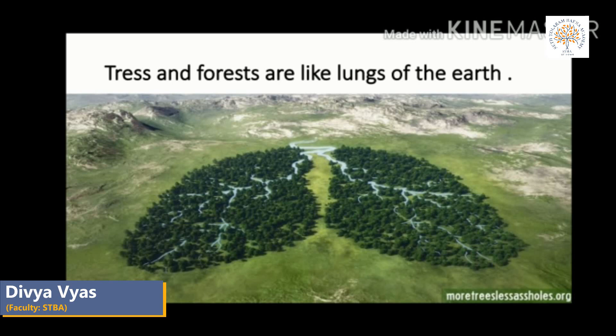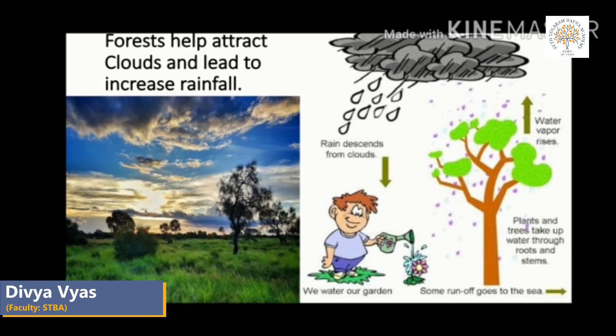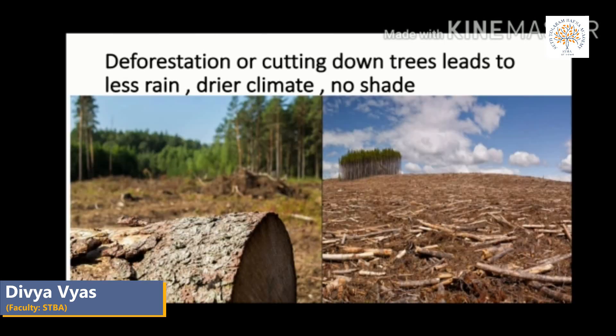Forests help attract clouds and lead to increased rainfall. Growing trees take water from the soil and release it into the atmosphere. Tree leaves also act as interceptors, catching falling rain which then evaporates, causing precipitation elsewhere — a process known as evapotranspiration. Deforestation, or cutting down of trees, leads to less rain, dry climate, no shade, and soil erosion.